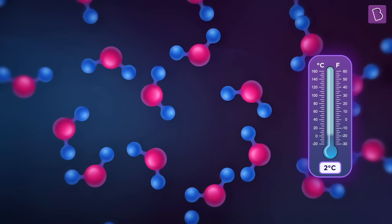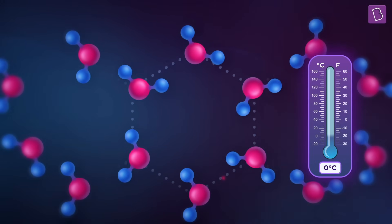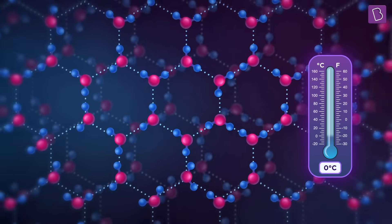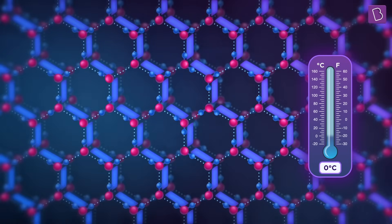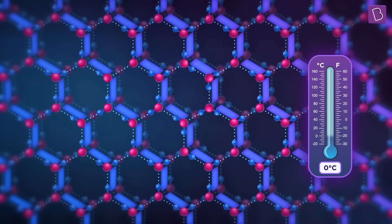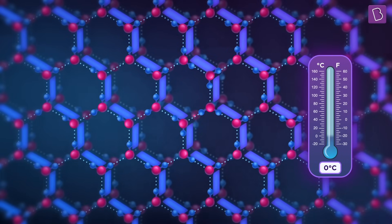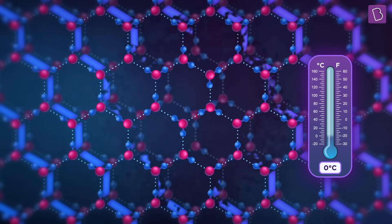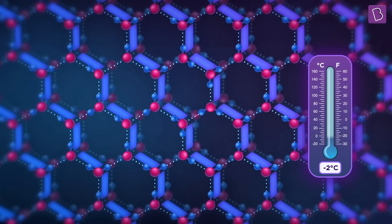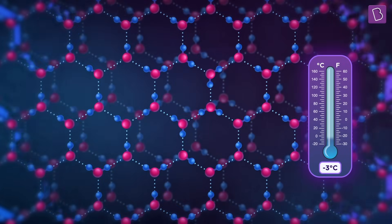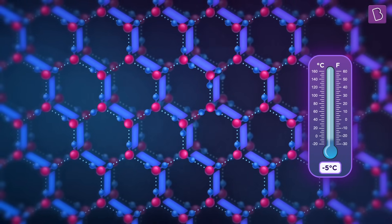But why? Remember that cage-like structure of ice. As the temperature dives below four degrees Celsius, water comes close to its freezing point, so its molecules try to arrange themselves in that cage-like manner. To do that, they need to move apart and water expands. That is why water below four degrees is less dense and tends to float over warmer water.